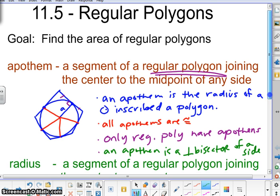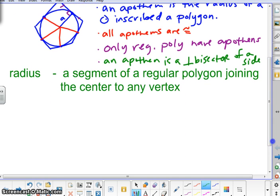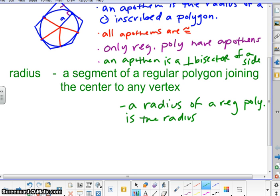So the second most important thing is the radius, and a radius is a segment of a regular polygon joining the center to any vertex. One thing about a radius is that a radius of a regular polygon is also the radius of a circle circumscribed about a polygon.